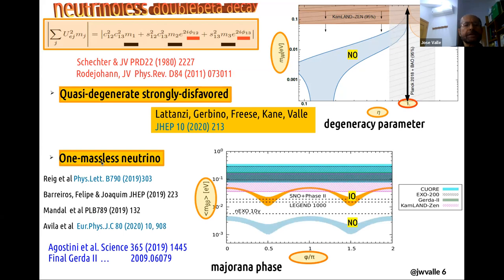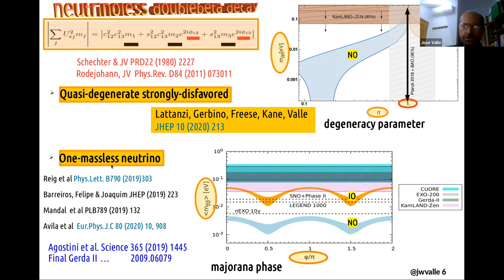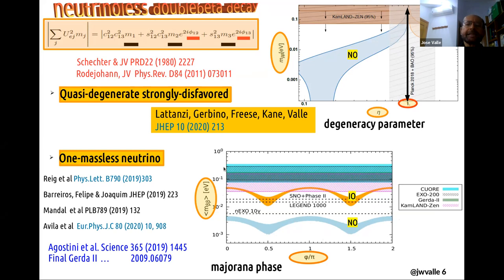So I move to another possibility, namely one in which one of the three light neutrinos is massless or nearly so. In this case, look what happens. Here we have two bands in blue and orange. But look at the blue band — it never touches zero. So there can never be a destructive interference in this case. If you have a theory which for some reason makes one of the neutrinos very light, then you must always have neutrinoless double beta decay. And the corresponding M-beta-beta amplitude correlates directly with the relative Majorana phase between the two light neutrinos, which is very interesting.